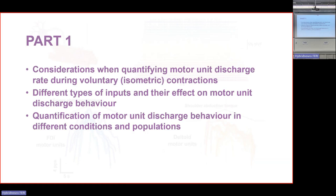Today I want to cover: the considerations when quantifying discharge rate during voluntary isometric contractions; how different types of inputs affect motor unit discharge behavior; and how discharge behavior differs across experimental conditions and populations, with examples from our lab studying different populations and adaptations in the neuromuscular system.